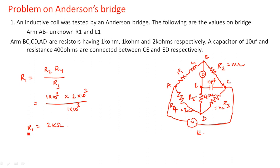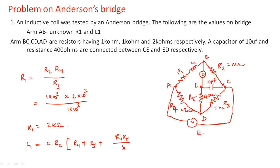Next, for L1, the formula is: L1 = C × R2 × (R4 + R5 + R4×R5 / R3). Let us substitute these values — it is very easy, no need to even use a calculator.